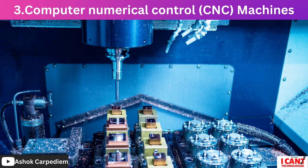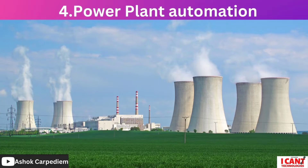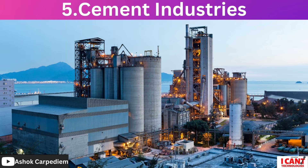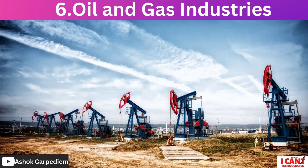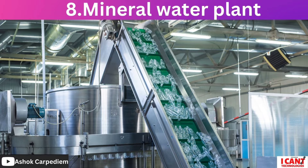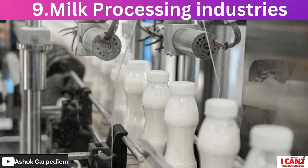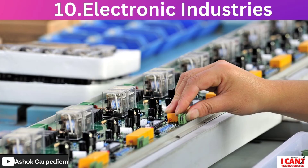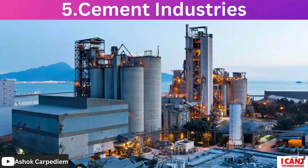Next we have computer numerical control, or CNC, machines, power plant automation, cement industries, oil and gas industries, home automation, mineral water plants, milk processing industries, and electronic industries. You can write all of these examples.